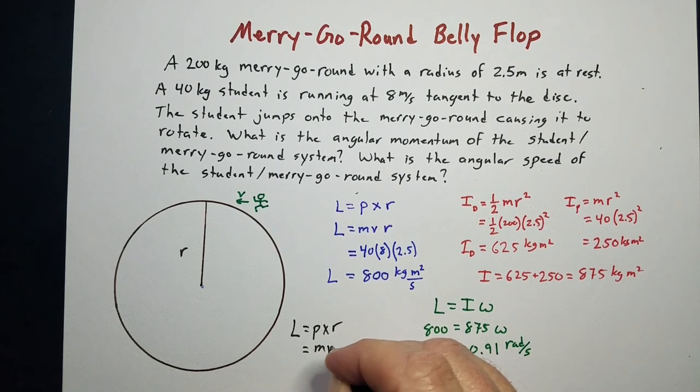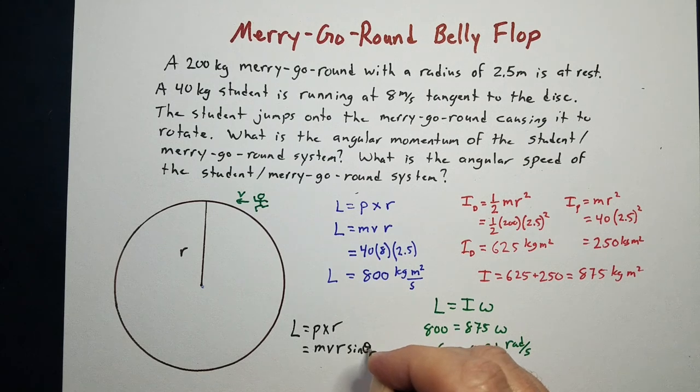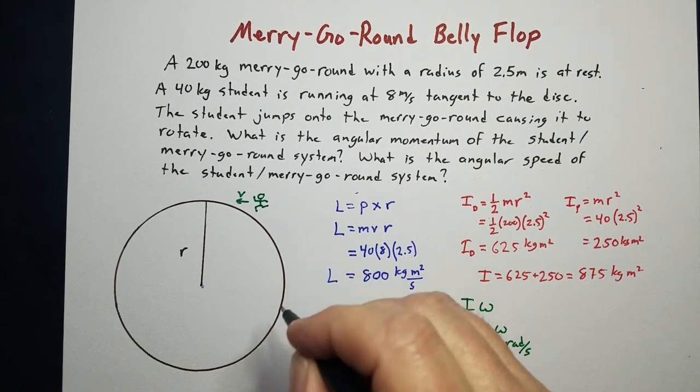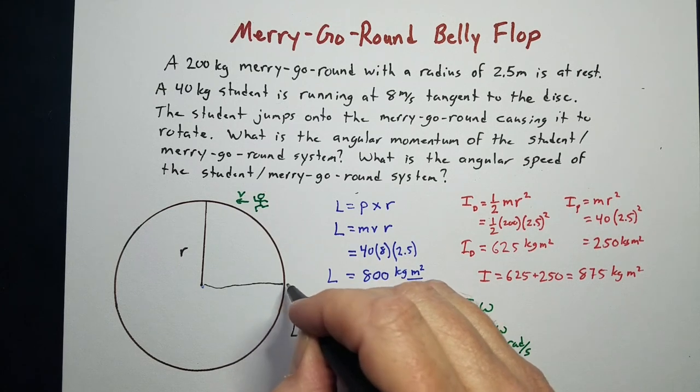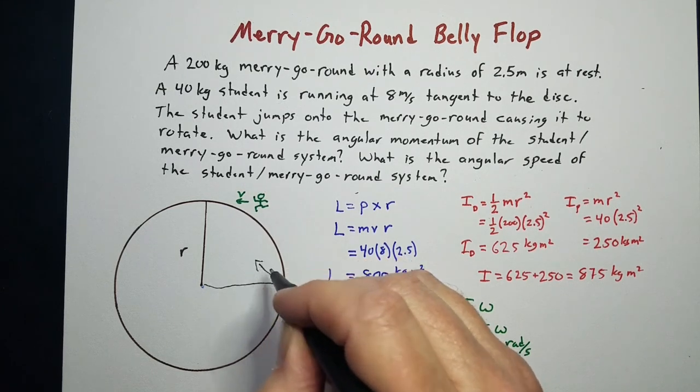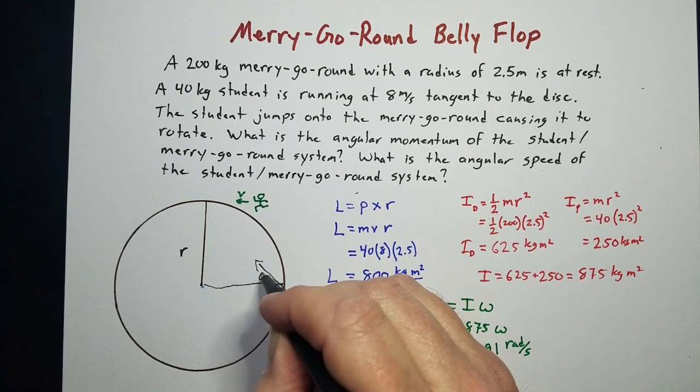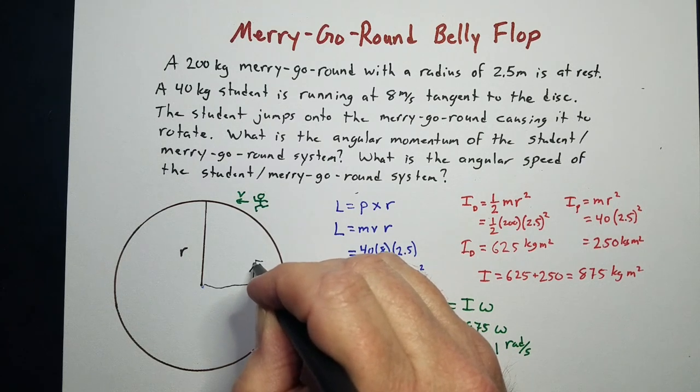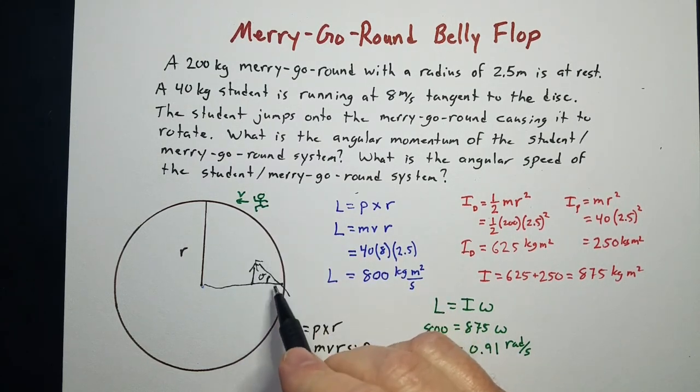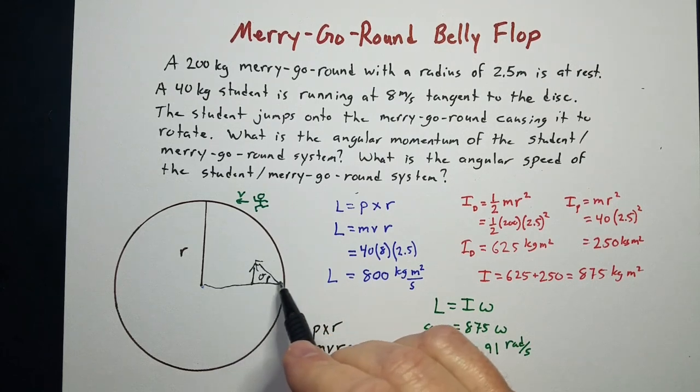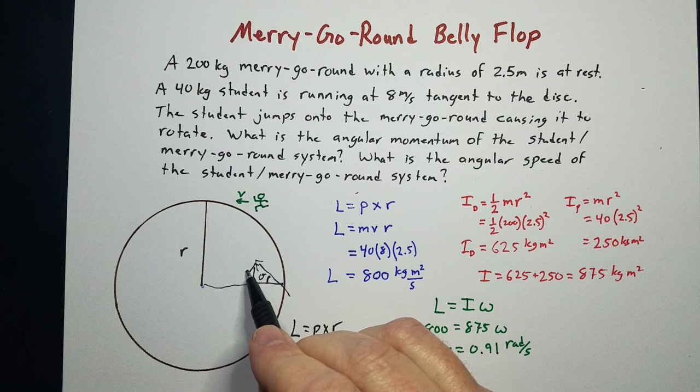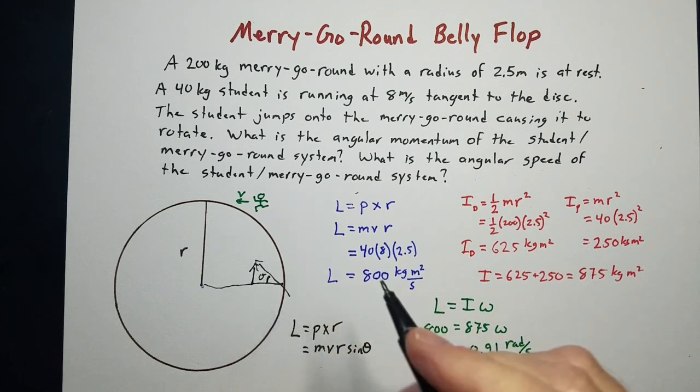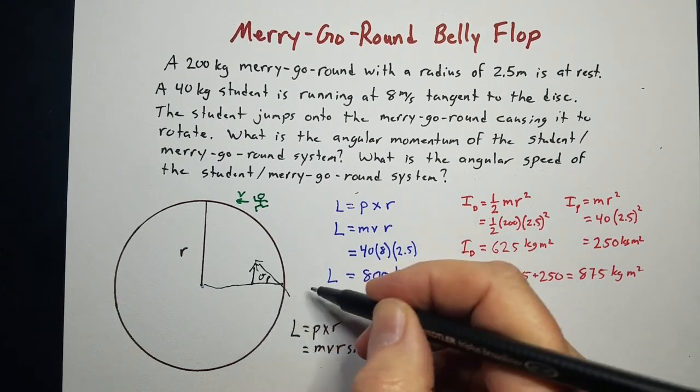If it hit at an angle, here's our radius poorly drawn, if it hits like this, we'll have to take that angle and we need to find the component that is tangent or perpendicular to that radius. And that's why we use the sine because it's going to be opposite of our angle.